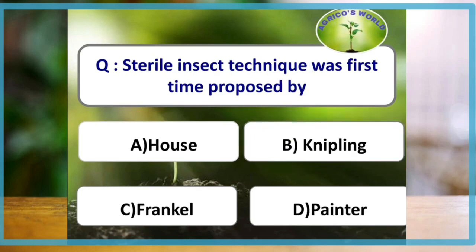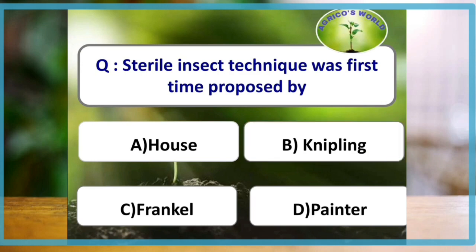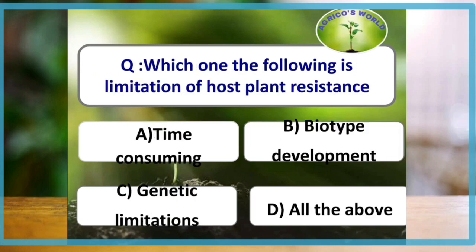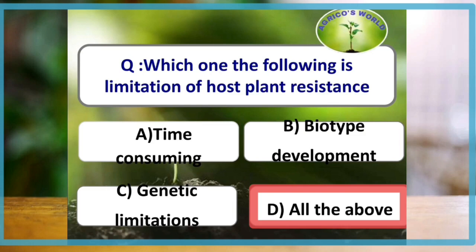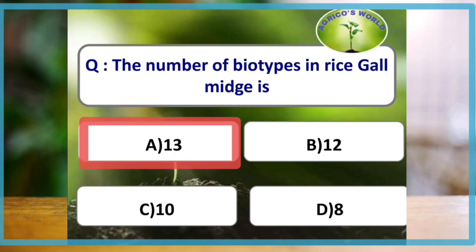Sterile insect technique was first proposed by the scientist Knipling. The limitations of host plant resistance include: time consuming, biotype development, and genetic limitations — all three are limitations of host plant resistance. The number of biotypes in rice gall midge are 13.